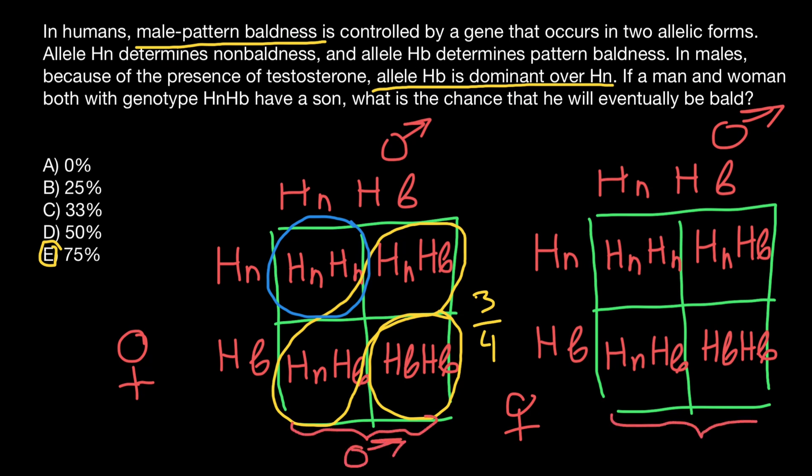That means that only in male progeny HB allele would be dominant. But in female progeny, because of the lower level of testosterone, the dominant allele is going to be HN. And take a look what's going to happen. Genotype HN-HN is going to be normal, and heterozygous genotype HN-HB also going to be normal.